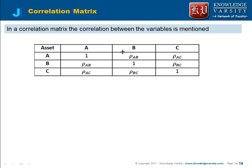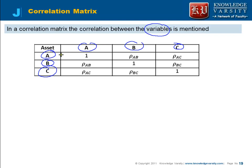Now we have the concept of a correlation matrix. In a correlation matrix, we try to represent the correlation between two variables. Suppose you have three variables A, B, and C. We are trying to represent the correlation that exists between A, B, and C.